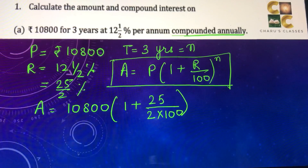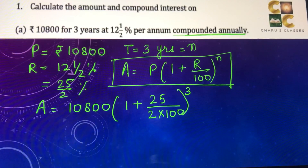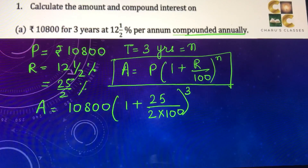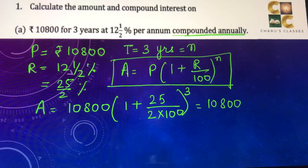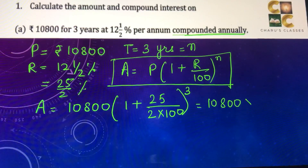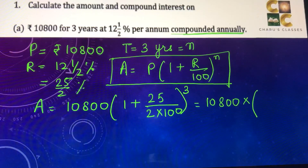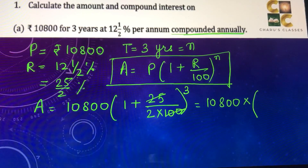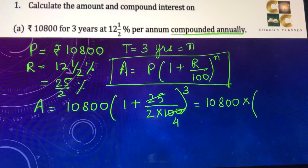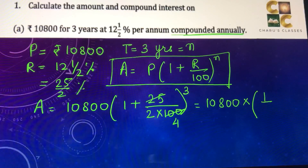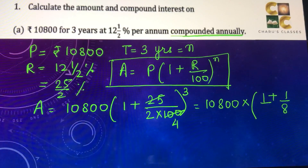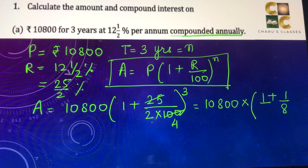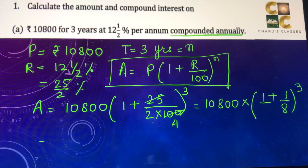This becomes 10,800 multiplied by (1 + 25/200). Now 25 and 100 will cancel — 25 fours are 100 — so we have 1 + 1/8, since 2 × 4 = 8, to the power 3.